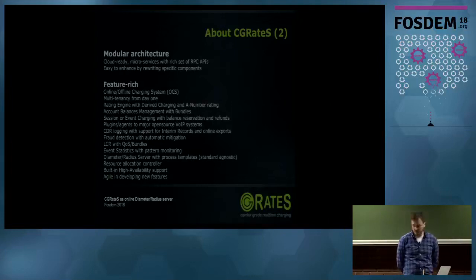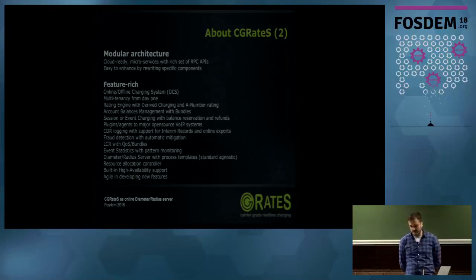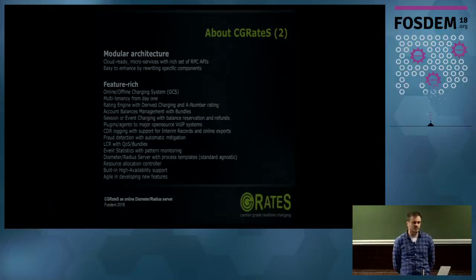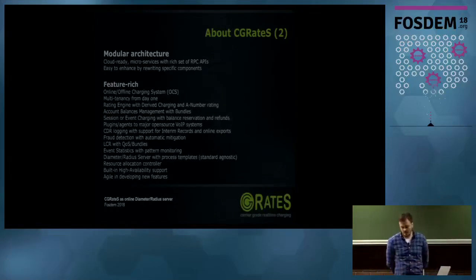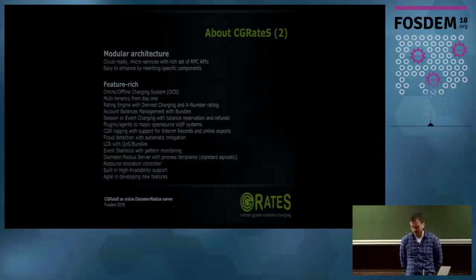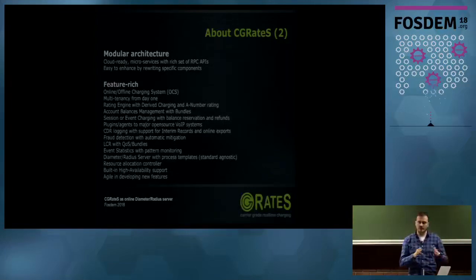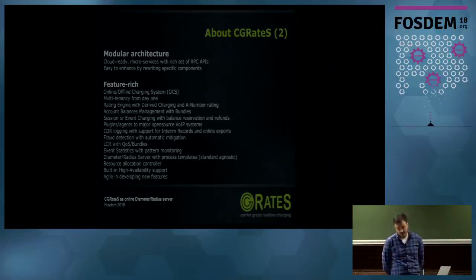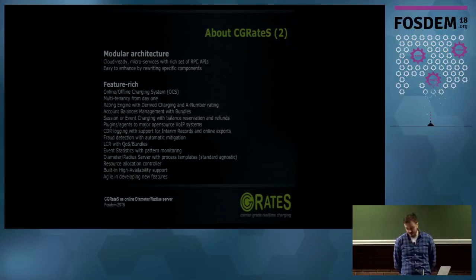It's feature-rich — what others call an online or offline charging system. It's multi-tenant. We have the oldest component as a rating engine with derived charging. Derived charging gives you the possibility to fork CDRs or calls, so you can in parallel bill all your distributors, suppliers, and customers. We also have account balances — bundles as others call them. You can have unlimited bundles: data bundles, minute bundles, monetary bundles. You can queue the order they're processed, configure failover between them, and we do session or event charging with balance reservation and refunds.